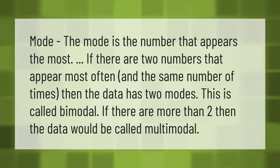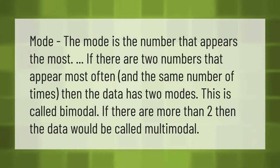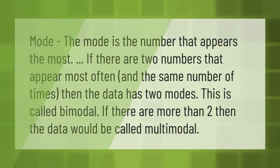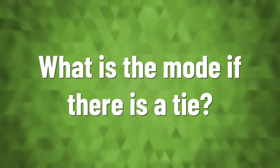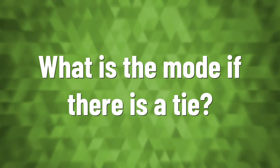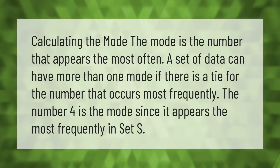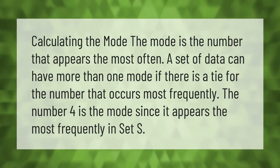The mode is the number that appears the most. If there are two numbers that appear most often and the same number of times, then the data has two modes — this is called bimodal. If there are more than two, then the data would be called multimodal.